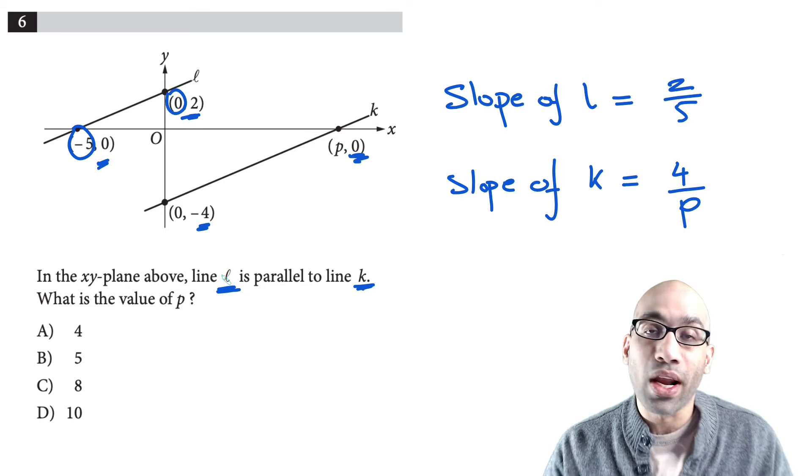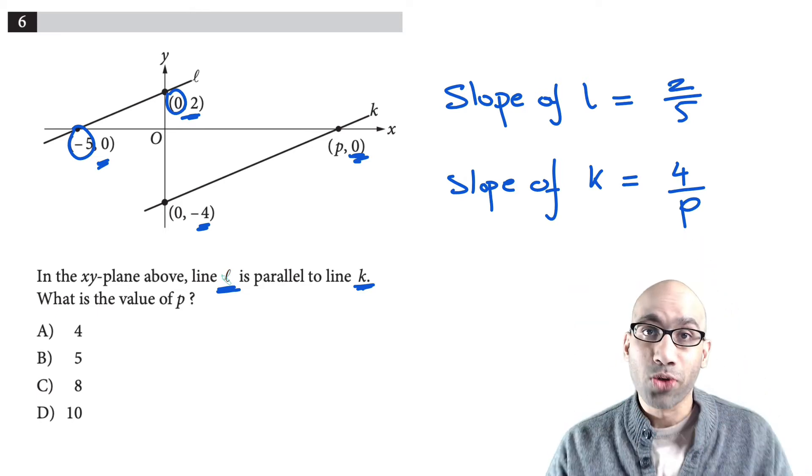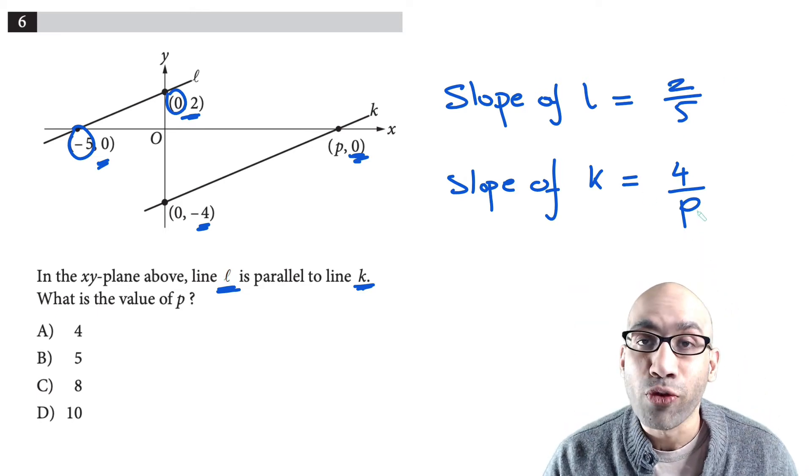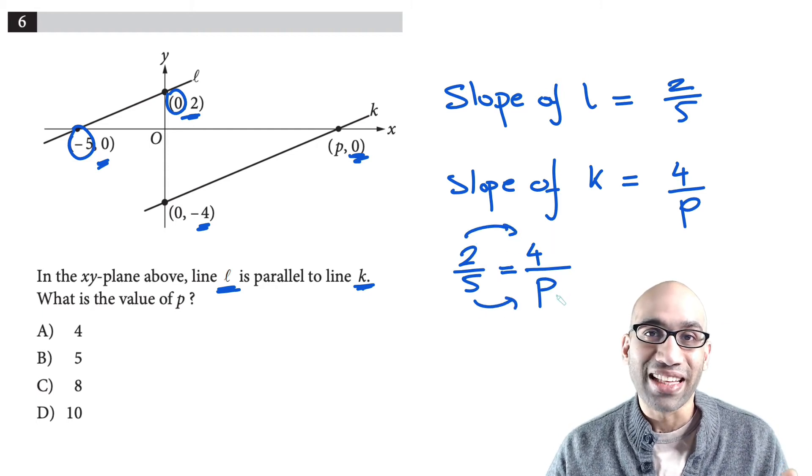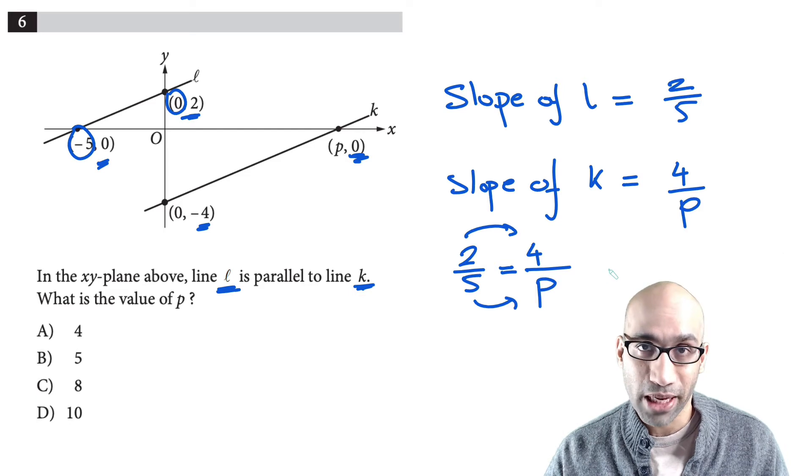And now you use the standard idea that when lines are parallel their slopes are the same. So 2 over 5 is 4 over p. Now you can see 2 times 2 is 4, so 5 times 2 is going to be 10, and so p is going to be equal to 10.